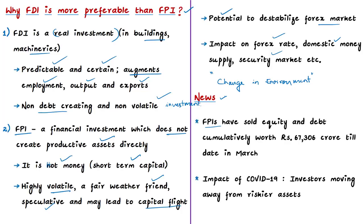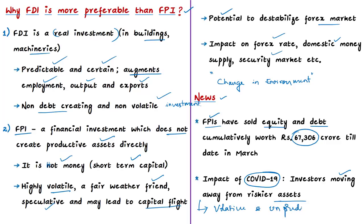The news article says that till date, foreign portfolio investments have sold equity and debt worth more than ₹67,000 crores. It is the highest ever witnessed in any single month. The main reason behind this is concerns over the COVID-19 pandemic, which has made investors move away from riskier asset classes. This can be related to what we have discussed — the volatile and unpredictable nature of foreign portfolio investments.